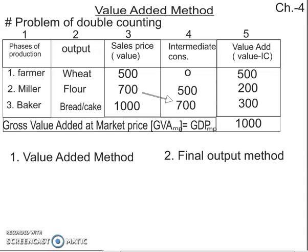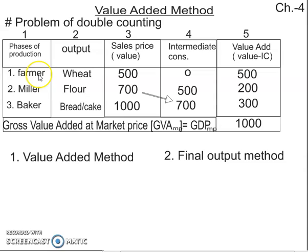Let me do a quick revision so you can understand the value-added method and then the problem of double counting. We have five phases in our example. There is a farmer, a miller, and a baker. The farmer produces wheat.